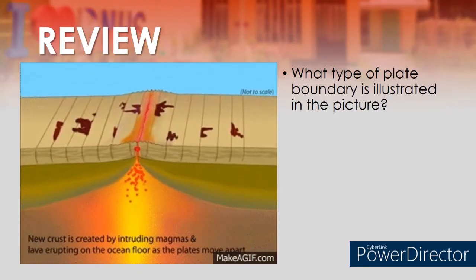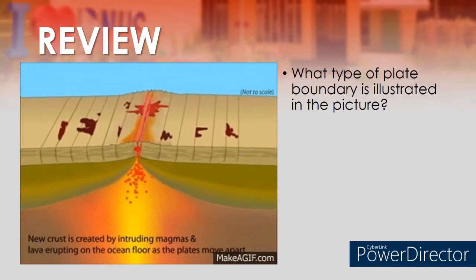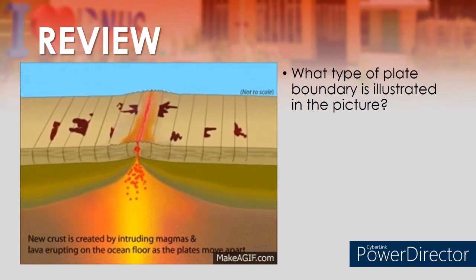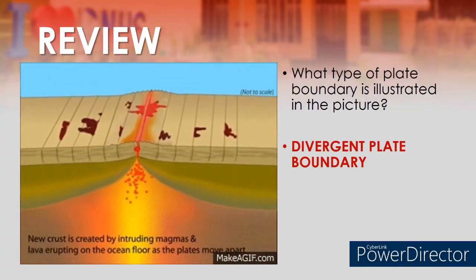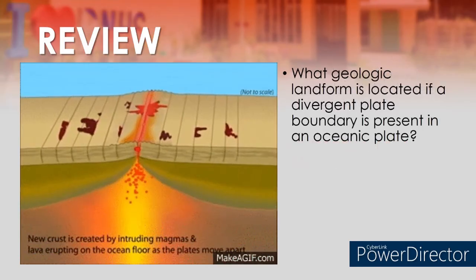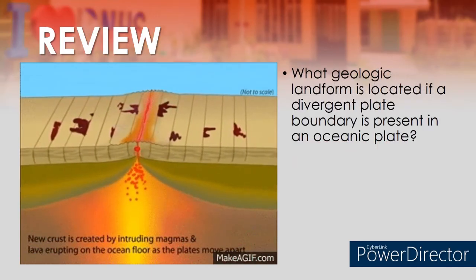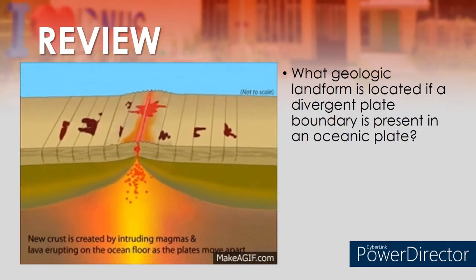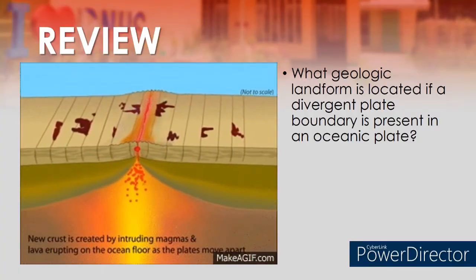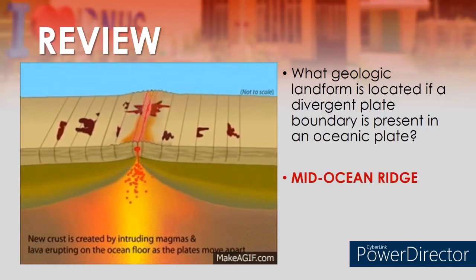Question number four: What type of plate boundary is illustrated in the picture? The correct answer is divergent plate boundary. And for question number five: What geologic landform is located if a divergent plate boundary is present in an oceanic plate? The correct answer is mid-ocean ridge.